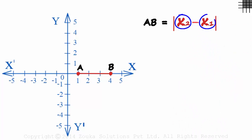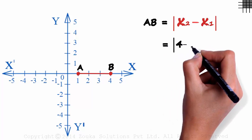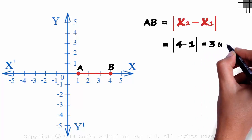x2 and x1 are simply the x coordinates of the two points. The x coordinate of B is 4 and that of A is 1. So the distance between A and B will be the absolute value of 4 minus 1. It will be three units.